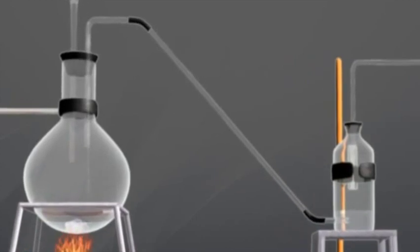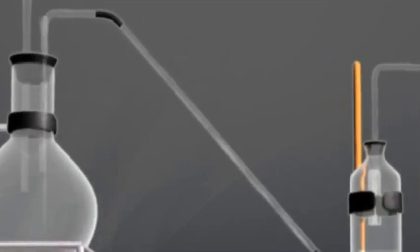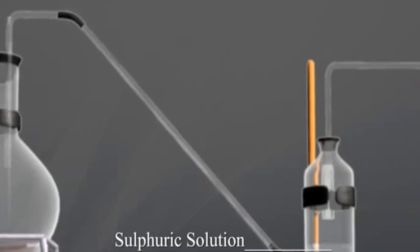When the mixture in the flask is gently heated, HCl gas is evolved. This HCl gas is again passed through sulfuric acid solution for drying.